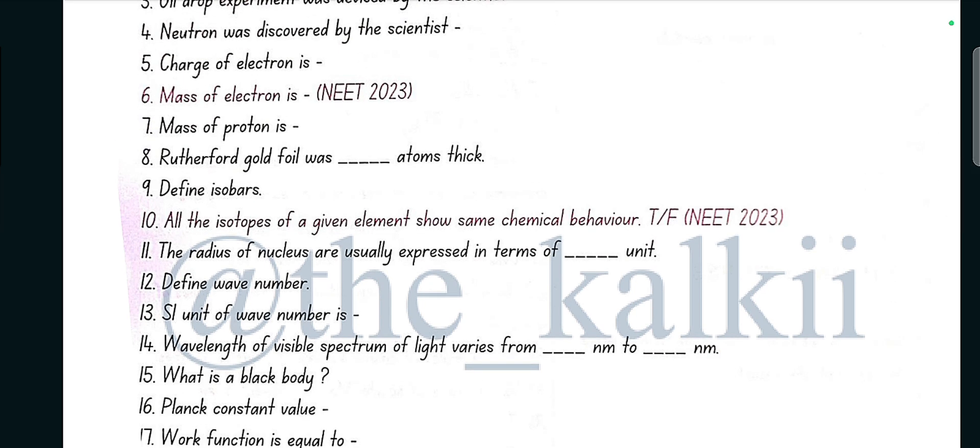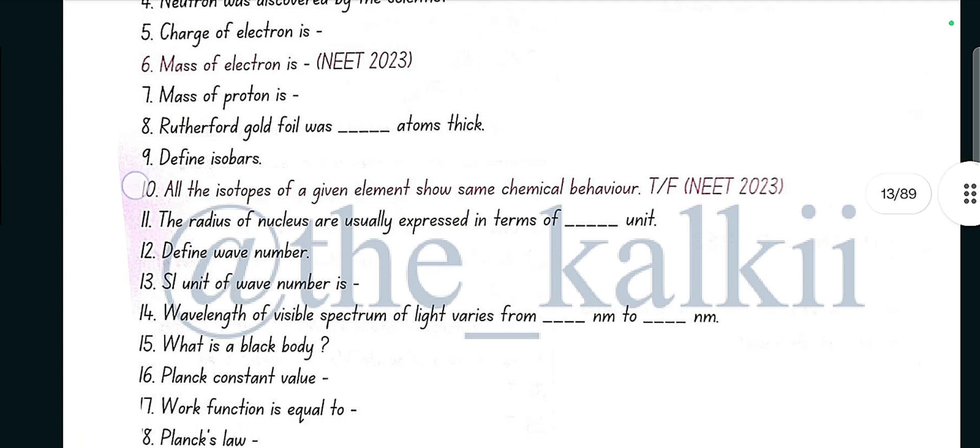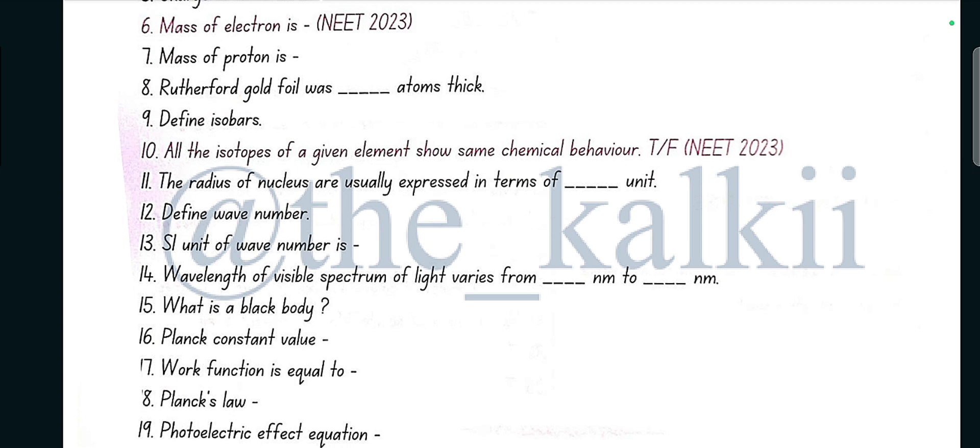Mass of electron is 9.1 into 10 raised to the power minus 31 kg. Mass of proton is 1.67 into 10 raised to the power minus 27 kg. Rutherford gold foil was 1000 atoms thick. Define isobars: atoms with same mass number but different atomic number.